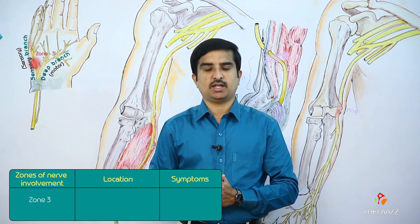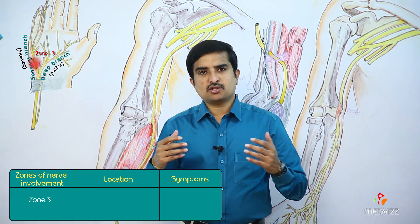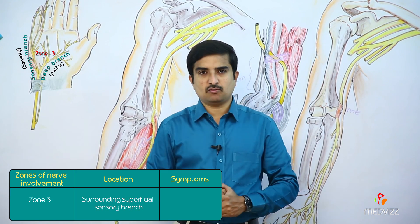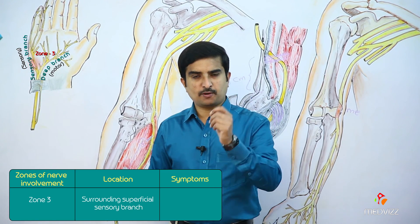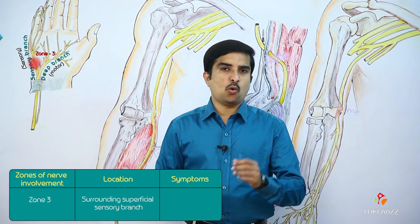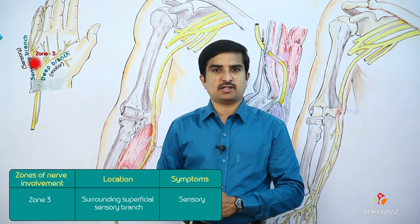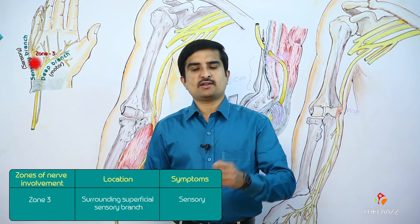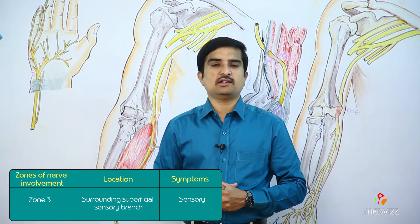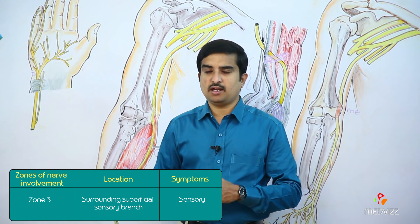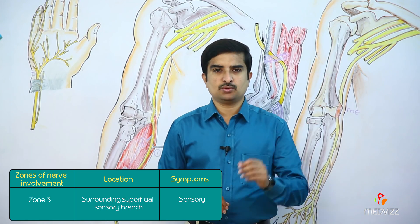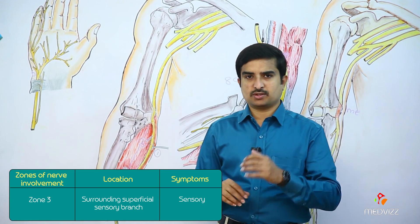In Zone 3 injury, only the sensory branch is involved, which means the superficial branch is involved. This in turn causes only sensory symptoms; motor symptoms are spared. Like this, the ulnar nerve injury in the Guyon's Canal has been classified into 3 zones.